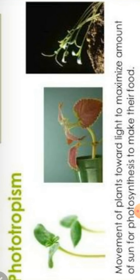Now let's start with the first trophic movement — phototropism. The movement of plants toward light to maximize the amount of sun for photosynthesis to make their food. In phototropic movement, plants grow towards the light, wherever maximum light is coming. Suppose you take a pot, keep it in your room near a window where light comes from only one side, and keep the pot away from that light source. After a few days, you will see the stem will grow towards the light.